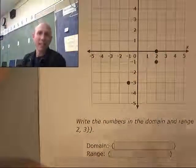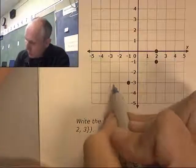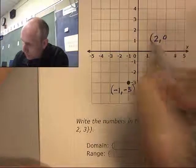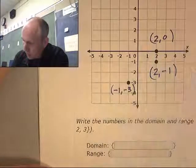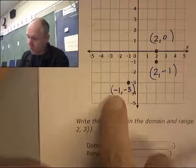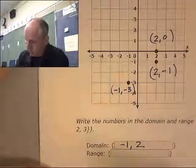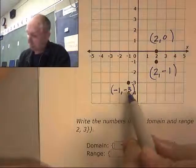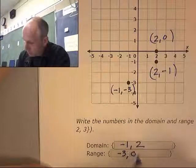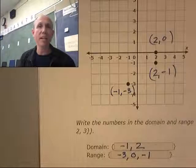This one, I've been given a set of points, haven't I? It's just the points are on a graph. So this point right here is negative 1, negative 3. This one's at 2, 0, 2, negative 1. So the domain are the X's. What are the X's? Negative 1 and 2. What are the Y's? Negative 3, 0, negative 1. That's it. Done. X's and Y's. Domain and range.